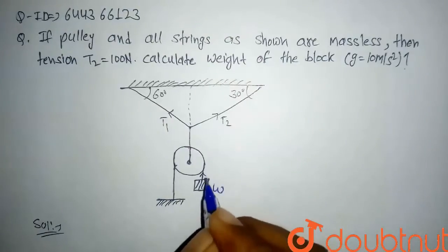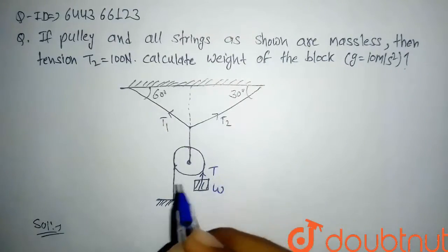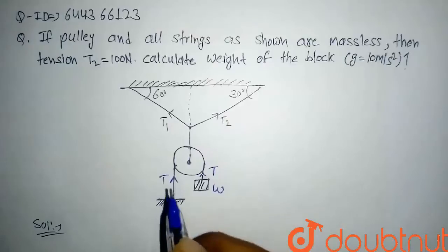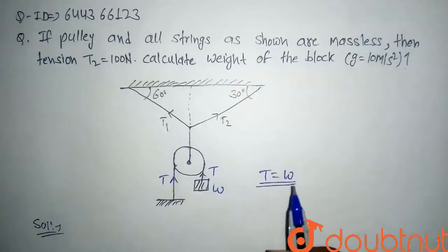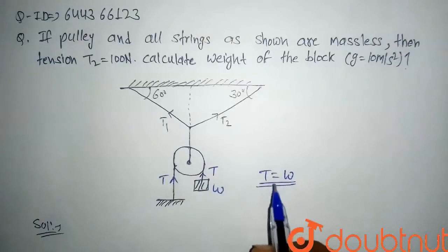Assume that the tension in this string is T, so here tension also will be T. So here T will be equal to w. So here we have to find the T so we can find w.